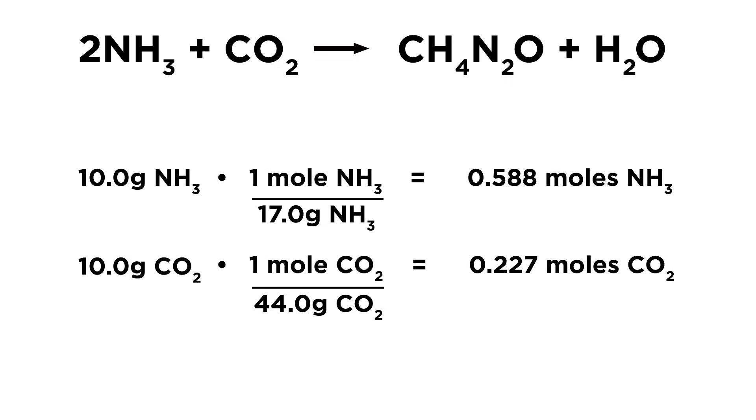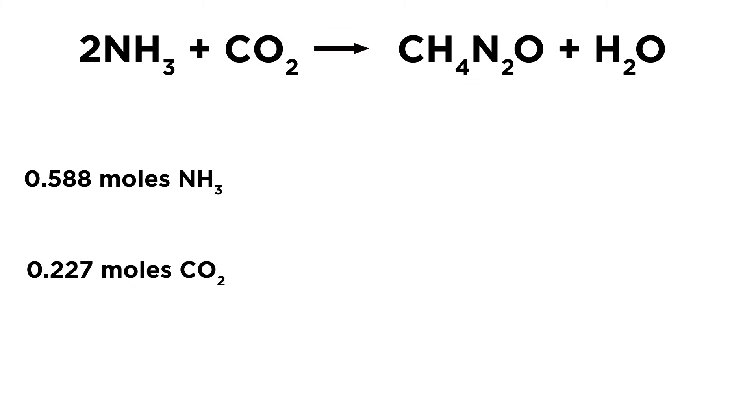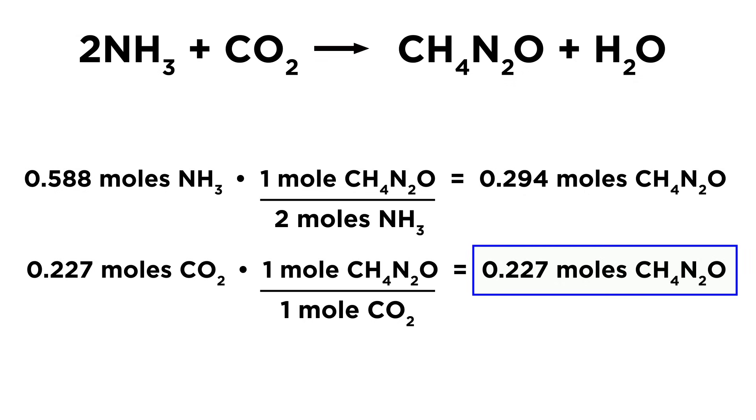We can now look at these numbers a few different ways. One way is to see how many moles of urea each has the potential to produce. Use the stoichiometric ratios to see that CO₂ can't produce as much, so that must be the limiting reagent.